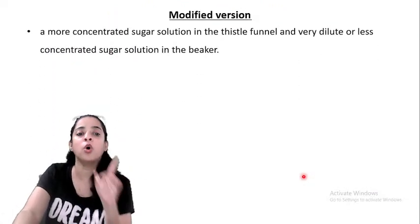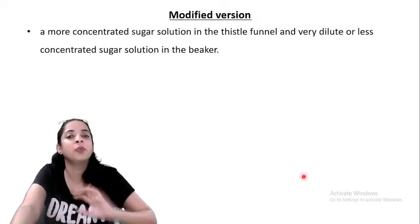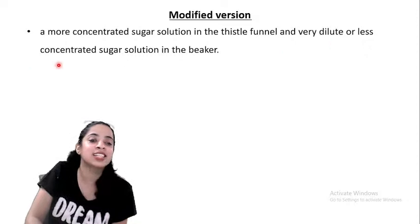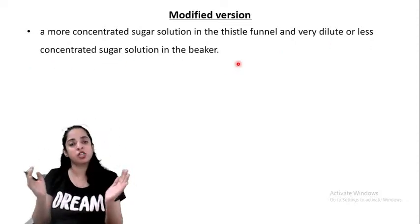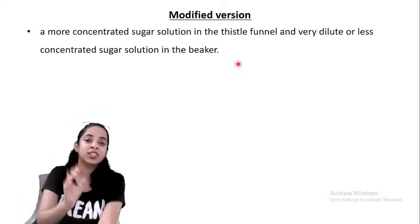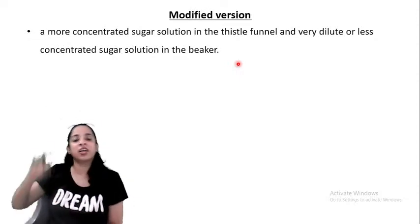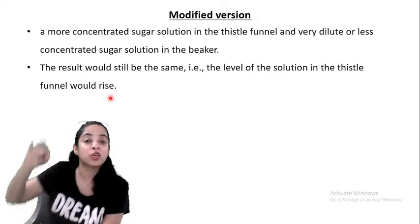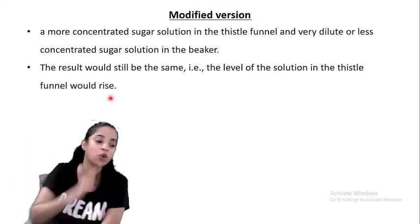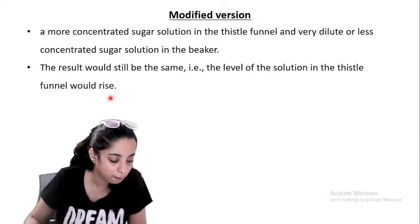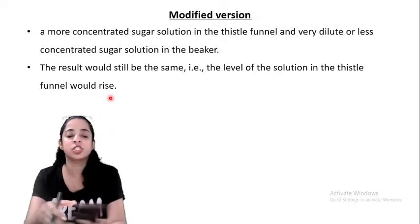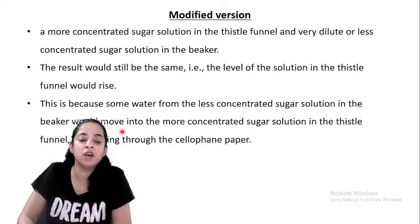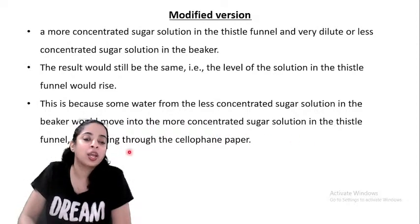In a modified version of the experiment, more concentrated sugar solution is taken in the thistle funnel and less concentrated sugar solution in the beaker. The result is still the same — the level in the thistle funnel rises — because water moves from the less concentrated sugar solution in the beaker to the more concentrated sugar solution in the thistle funnel through the cellophane paper.